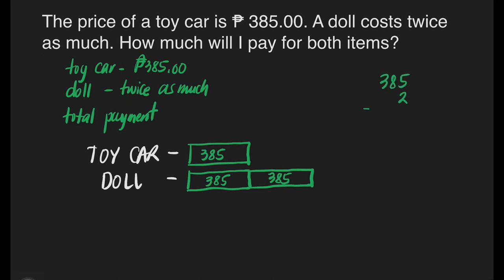385 times 2: 2 times 5 is equal to 10 — write 0, carry 1 at the top of 8. 2 times 8 is equal to 16, plus 1 is 17 — carry 1 at the top of 3. 2 times 3 is equal to 6, plus 1 is equal to 7. So the price of our doll is 770 pesos.